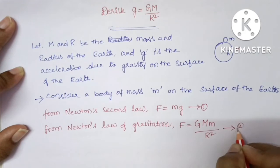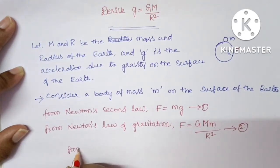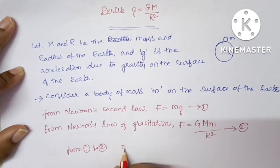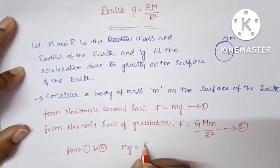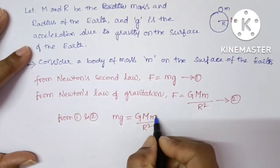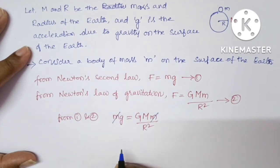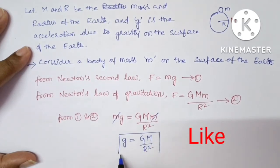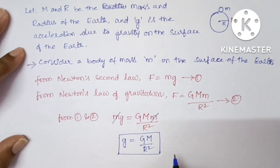Let it be equation number 2. From equation number 1 and 2, we can write mg is equal to G into capital M and small m upon R square. Here small m and small m will get cancelled. So g is equal to capital G into M upon R square. This is the formula for acceleration due to gravity on the surface of the Earth.